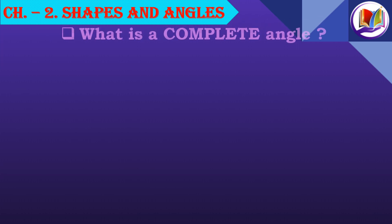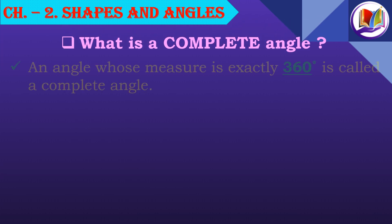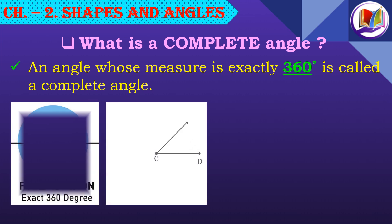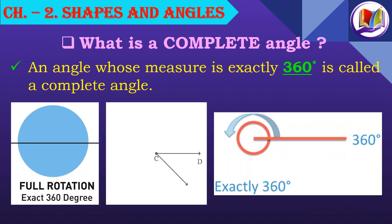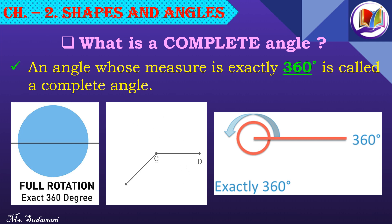What is a complete angle? An angle whose measure is exactly 360 degrees is called a complete angle. When it completes one full rotation, it forms a circle at the vertex, and its measure is 360 degrees.